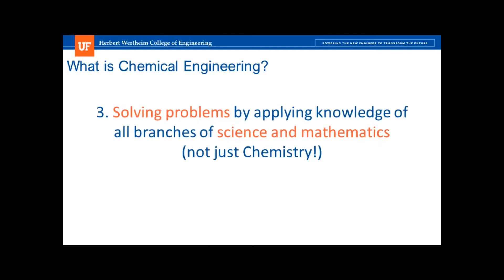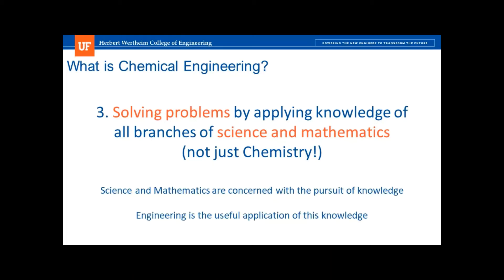A third way I like to think about chemical engineering is just the ability to solve a problem by applying knowledge of science and mathematics. I focus heavily on the critical thinking aspect in each course that I teach, because the ability of chemical engineers to learn and apply their knowledge to new and unfamiliar problems is a big reason why we are always in demand in a variety of jobs and industries. A useful way to think about the difference between engineering and core science and mathematics is that science and mathematics seeks to explain the world as it is, while engineering seeks to exploit or apply this knowledge to build things or to solve problems.